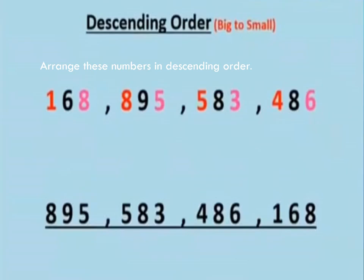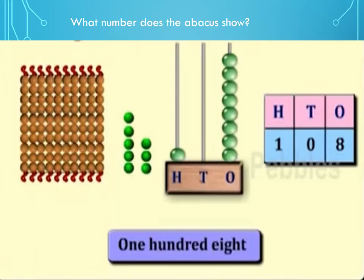This is our next topic. In this we will learn how to write numbers in hundreds with the help of abacus. So what number does abacus show? Here in abacus we have 1 bead in hundreds, 0 beads in tens, and 8 beads in ones, means 108.